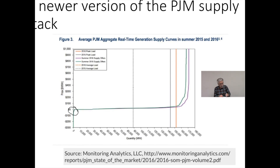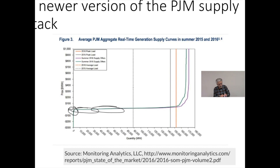So some resources can have a negative marginal cost of operation, in which case certain demanders of electricity will actually be compensated for using electricity at that time rather than having to pay for it. Then we have a number of zero marginal cost sources — wind power, solar power, hydroelectric power — followed by nuclear, coal, and natural gas.